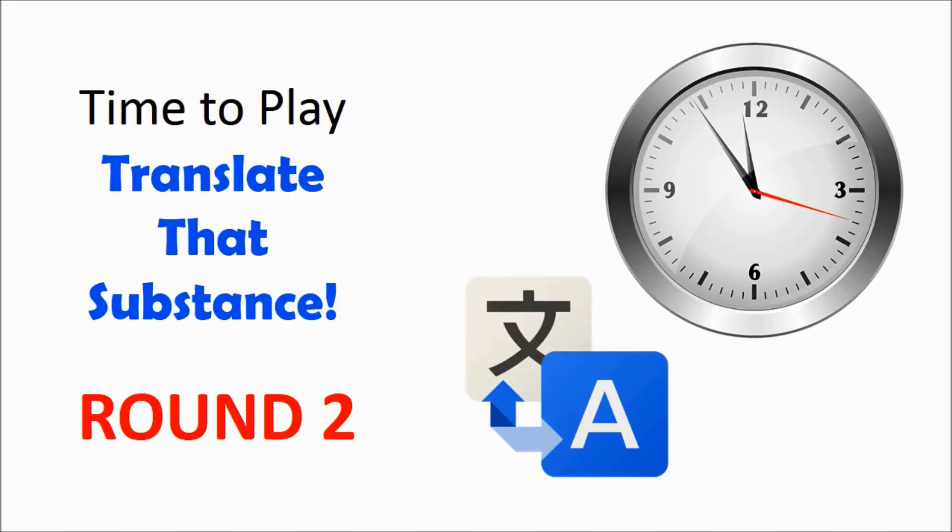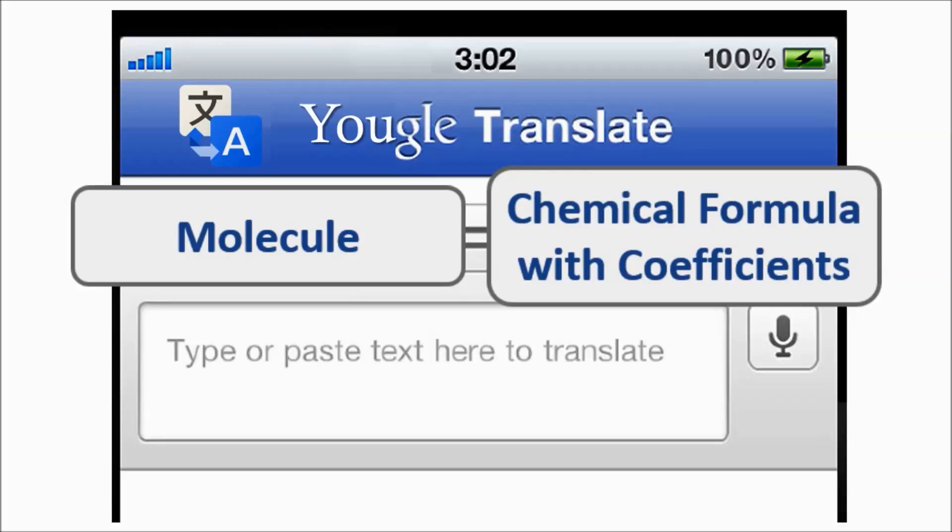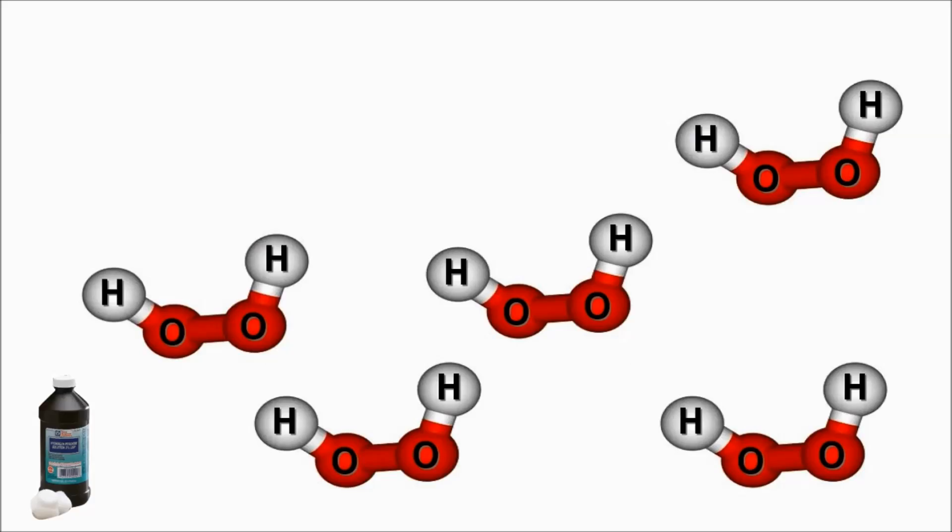All right, now we're ready for round two. This time, you'll see a picture of more than one molecule of the same compound. Count the atoms of each element in the molecule and count the number of molecules. Translate what you see into a chemical formula with a coefficient.